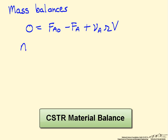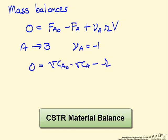For an A goes to B type reaction, the stoichiometric coefficient of A is minus 1, and so the balance can be written, and let's leave this as rate of reaction times the volume.